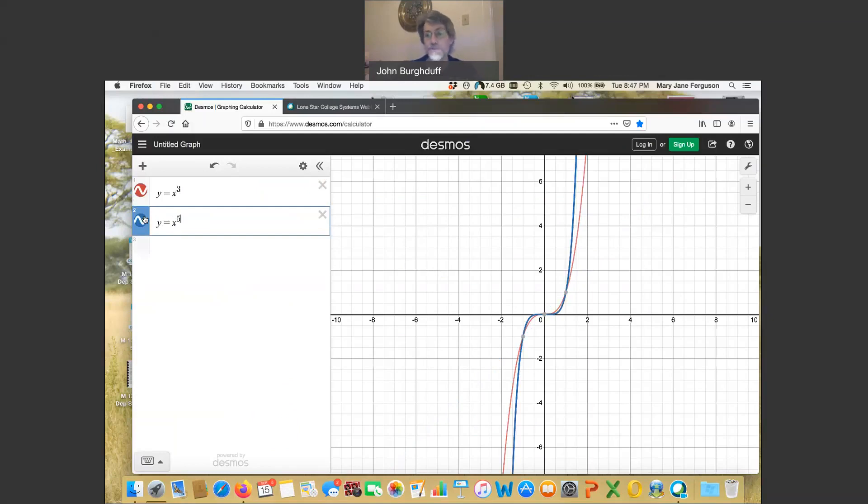Notice that the shapes really are kind of similar. Let's zoom in and zoom out and kind of compare them a little bit. So y equal x cubed is the red one, and y equal x to the fifth is the blue one.